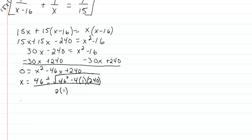That gives us x equal to 46 plus or minus the square root of 1156, all over 2. The square root of 1156 simplifies, so we have x equal to 46 plus or minus 34, all over 2.